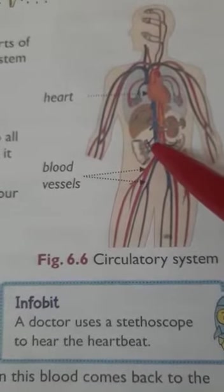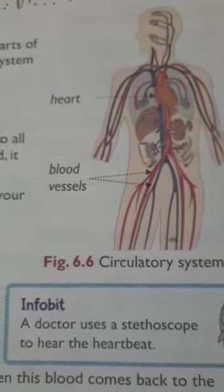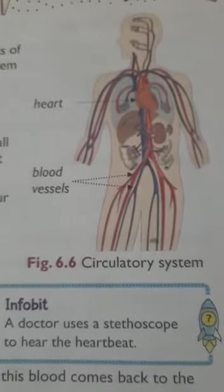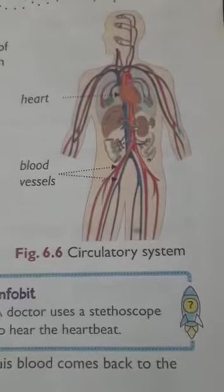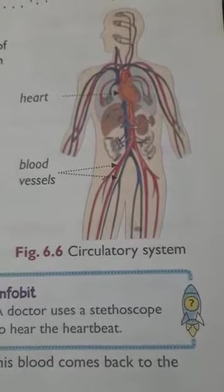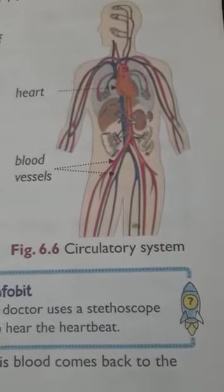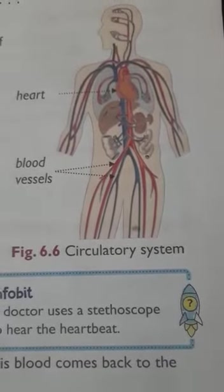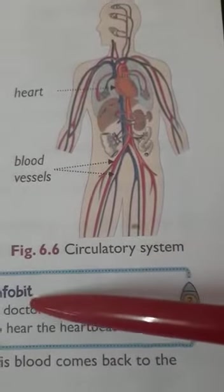When the heart pumps blood, it makes a sound called a heartbeat. When we sit silently we can feel it, or we can feel it by placing our hand on the chest. When we work hard or run, our heartbeat increases, because the heart needs to pump more blood and more oxygen. Keep your hand on the left side of your chest to feel the heartbeat.